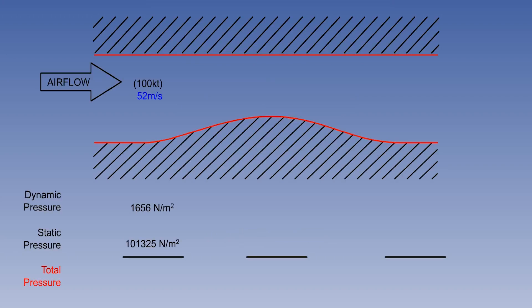Let us consider a mass of air at ISA conditions, moving at 100 knots or 52 meters per second. Static pressure is 101,325 newtons per square meter. Density, 1.225, giving a dynamic pressure of 1656 newtons per square meter.